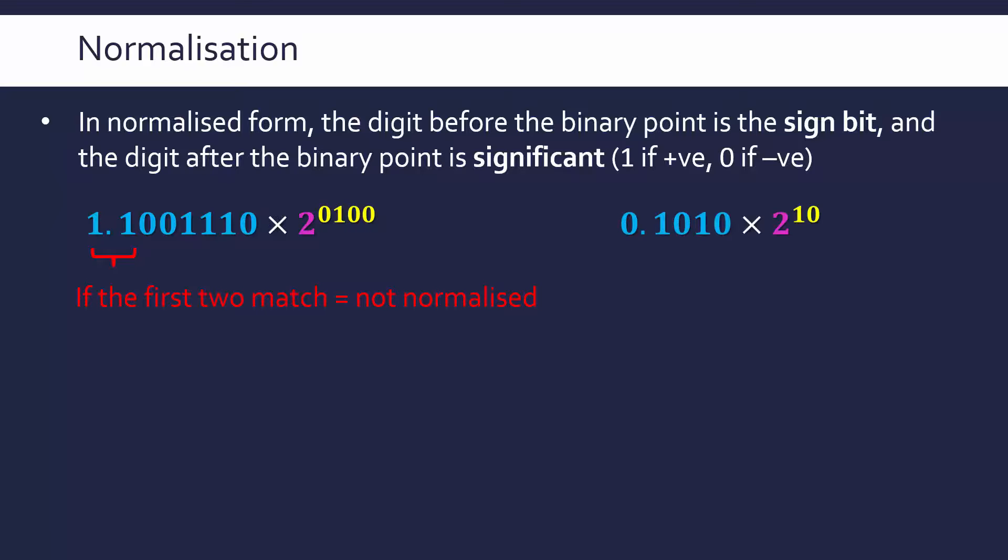Whereas here, another example, this number is normalised because our first two digits are different, so this is perfectly fine. If this one on the right is maximising precision, the one on the left is a bit wasteful.